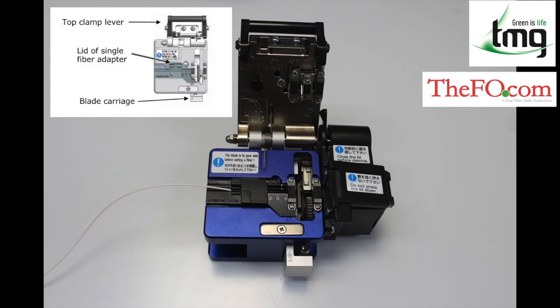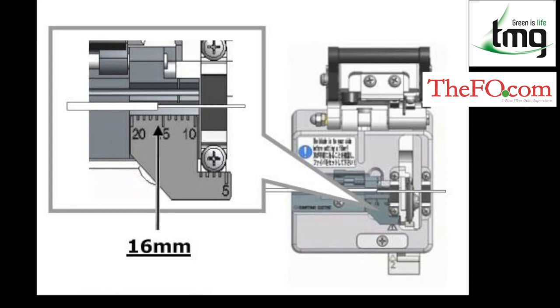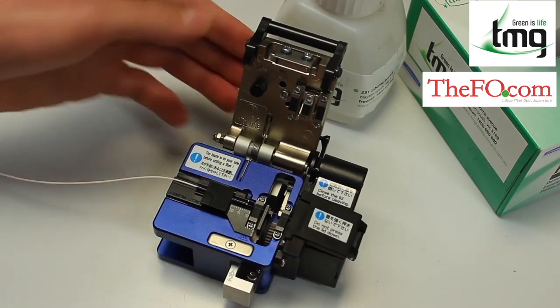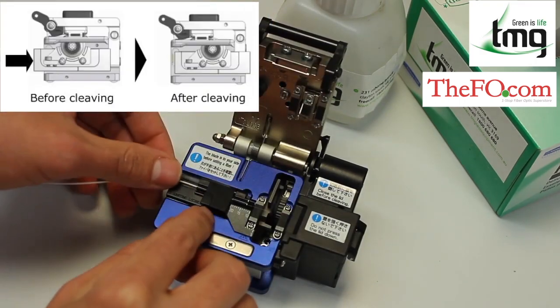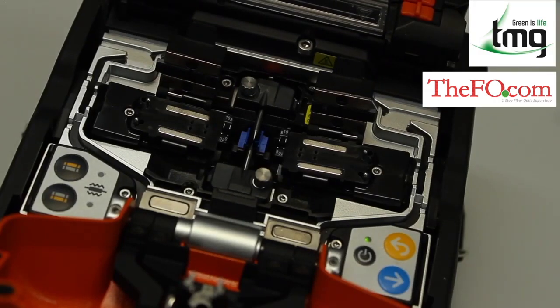Now open the lid of the cleaver and make sure the blade carriage is in the forward position and the bin lid is open. Lower the fiber into the groove with the fiber coating at the correct mark on the ruler of the cleaver. Clamp the fiber into place, lower the bin lid, close the cleaver and push the blade carriage forward. Carefully remove the fiber and then carry out the same procedure with your second fiber to be spliced.